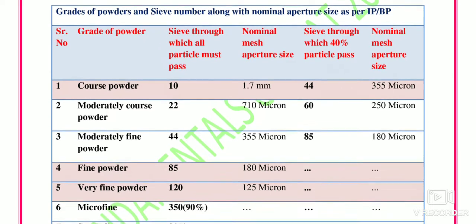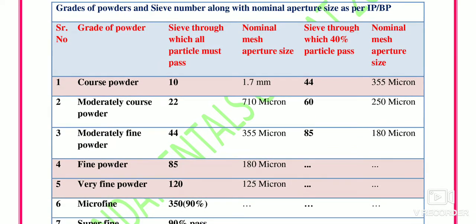An important table defines the grade of powder: coarse powder, fine powder, and very fine powder, defined according to standards. The table columns are: grade of powder, sieve through which all particles must pass, nominal aperture, and sieve through which 40% of particles should pass. Coarse powder is defined as powder where all particles must pass through sieve number 10 and 40% must pass through sieve number 44. If all particles pass through sieve number 22 and 40% pass through sieve number 60, that is moderately coarse powder.